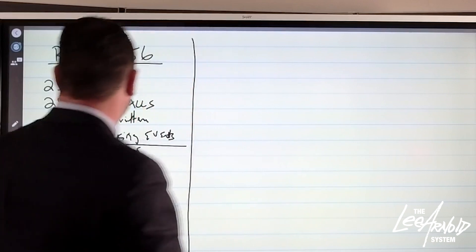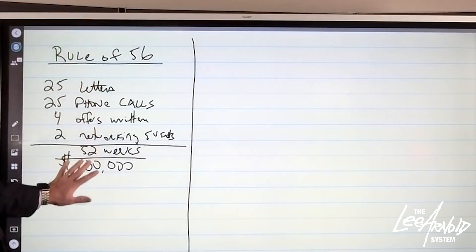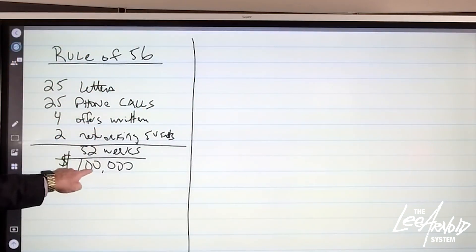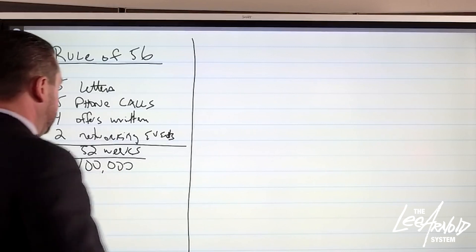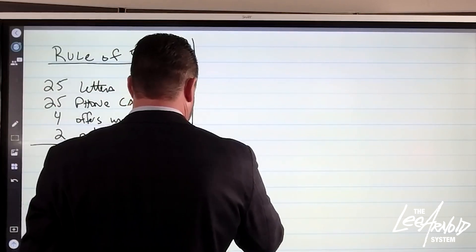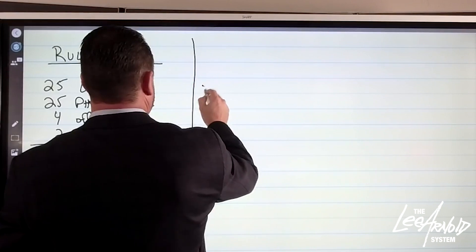Well guys, if these metrics give you $100,000 in income and you would like to make $200,000 in income, then all we're going to do is we're just going to double down.